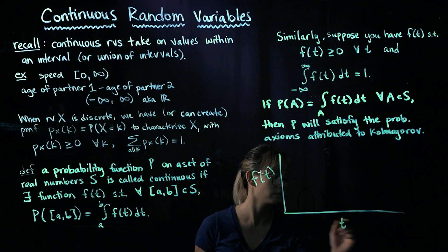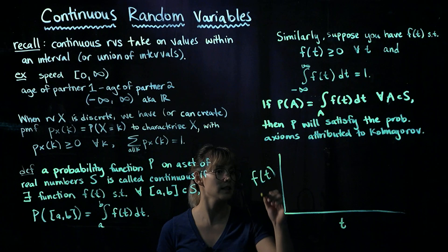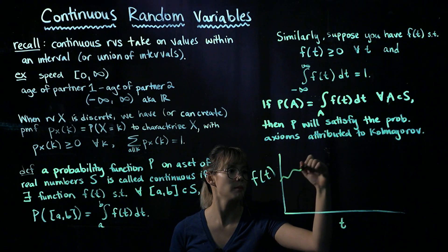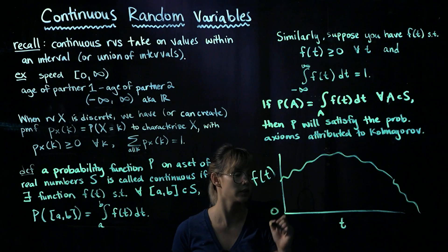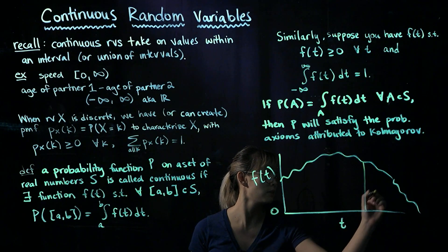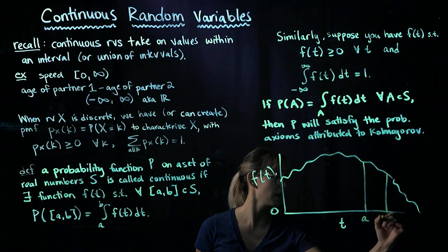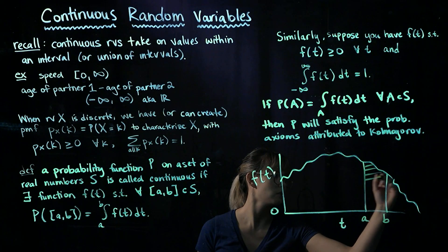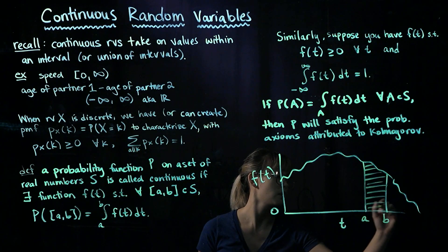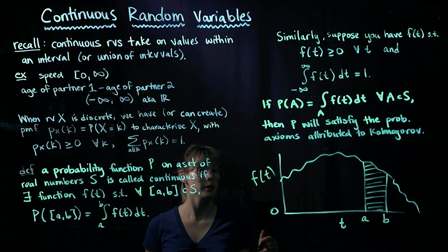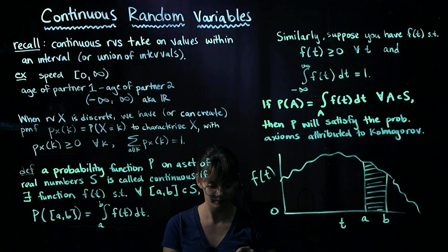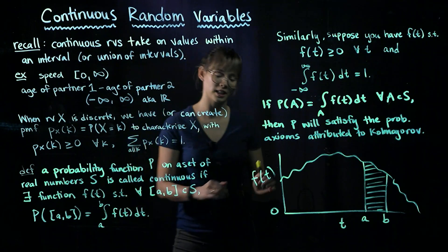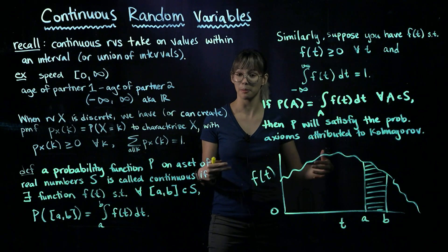So here we have different values of T, and here we have F of T. And maybe this is what F of T looks like. It's positive everywhere. Here's zero. If we want to integrate from A to B, then that will give us the probability that our random variable is between A and B. So that's how we'll use it. We'll do lots more examples in upcoming videos.